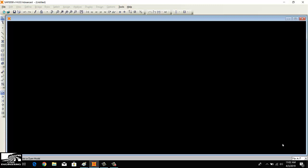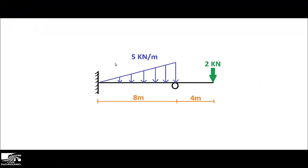Welcome back to the 7 Engineering YouTube channel. Today I will show you how to draw the shear force and bending moment diagram with the help of SAFe 2000 software for a propped cantilever beam. The beam has a fixed support on one end and a roller support, with the other end free. The total length is 12 meters, with a triangular load increasing from zero to 5 kilonewton per meter over 8 meters, and a concentrated load of 2 kilonewton at the end.